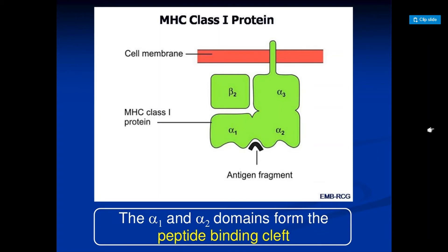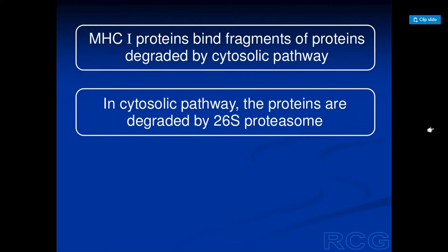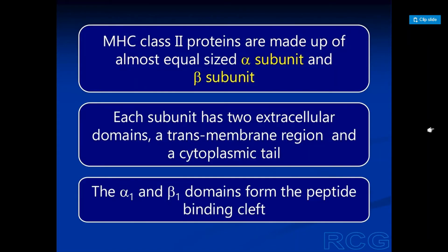The alpha 1 and alpha 2 domains form the peptide binding cleft. This is the ribbon-shape structural view of the MHC class 1 protein. MHC class 1 proteins bind fragments of protein degraded by the cytosolic pathway. In the cytosolic pathway, proteins are degraded by the 26S proteasomal system.